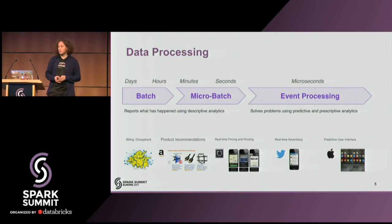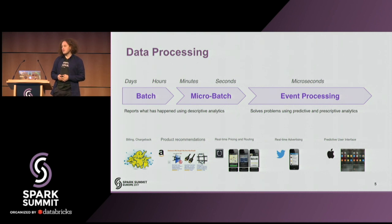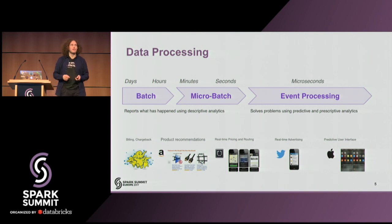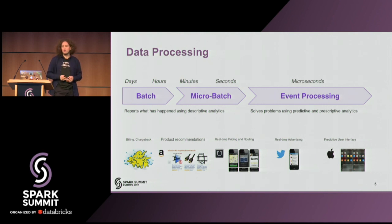If we look at the entire ecosystem of data processing, there are different use cases. There's batch processing, which is still the traditional MapReduce. Then there's micro-batching where I need faster latency times, somewhere between minutes and seconds — this is where Spark streaming is really good. And then there are use cases where I need something even faster: event processing, for example credit card data, where I don't want to wait tens of seconds for a response.